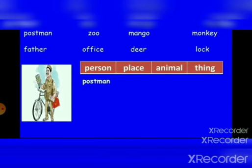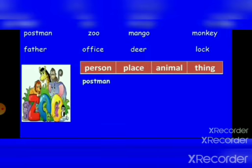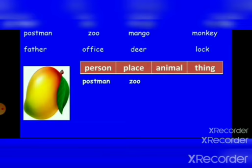Postman. Zoo — zoo is a place. Mango — mango is a thing.